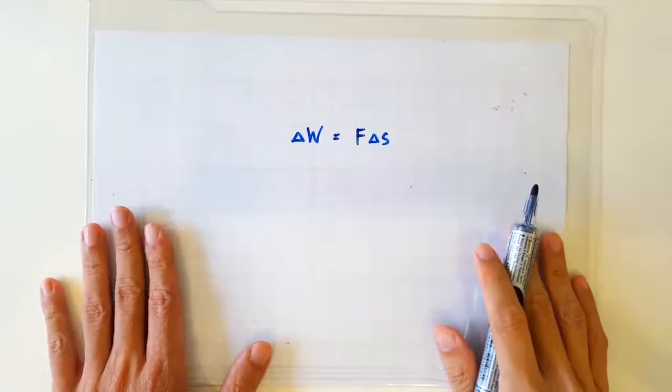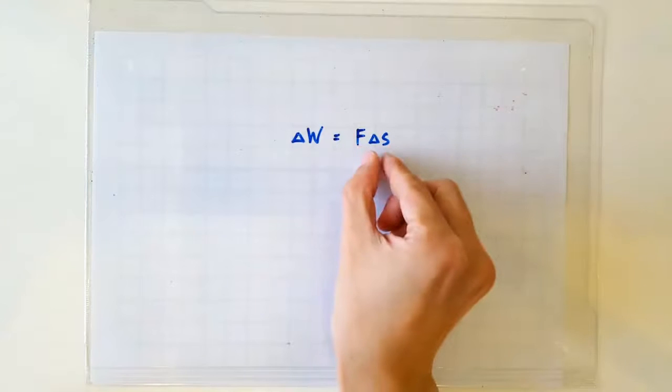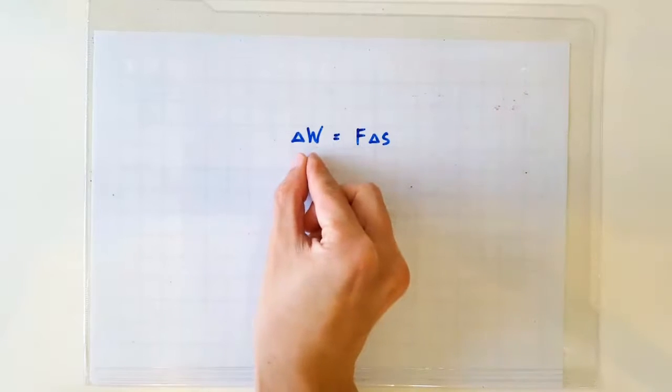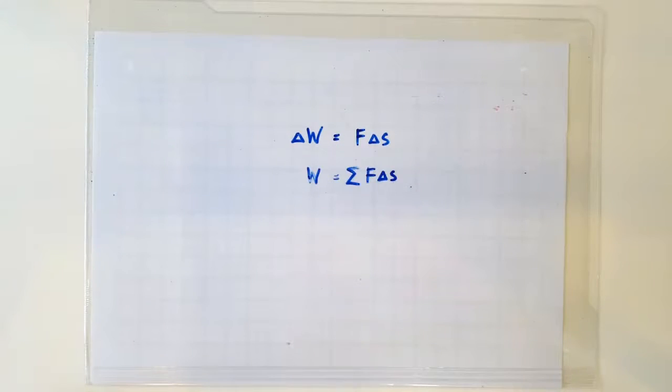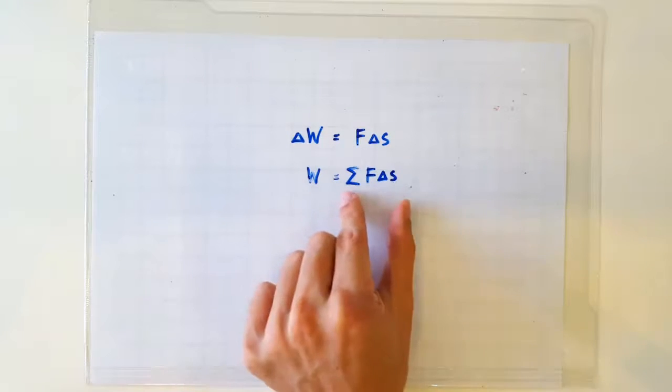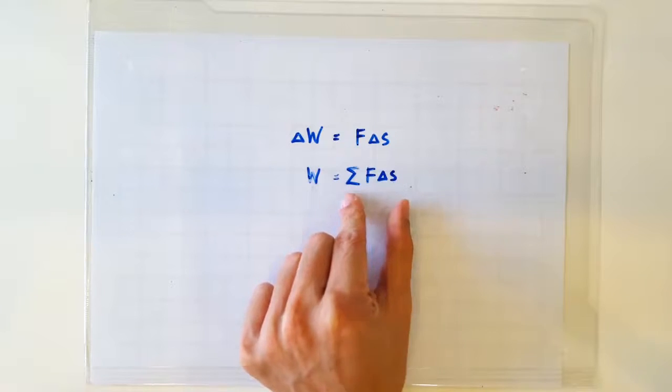Mathematically, it is actually quite obvious. Every little bit of F times delta S gives us a little bit of work done. To obtain the total work done, we have to sum up all the little bits of F times delta S.